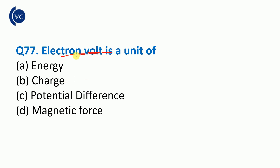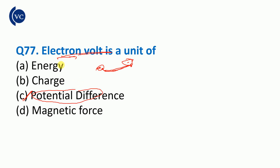Electron volt is the unit of energy. The potential difference between two points — positive or negative charge difference — gives the potential difference, and the unit for that is the electron volt.